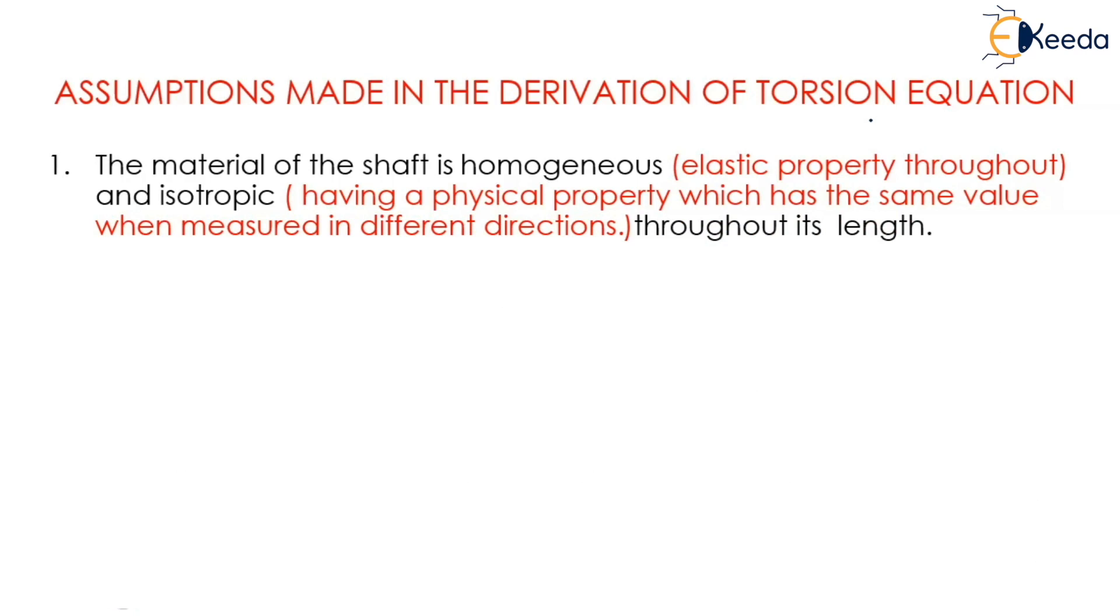What is homogeneous? It has the same elastic property throughout. The elastic property is the same throughout the shaft. And isotropic means it has a physical property which has the same value when measured in different directions throughout its length.